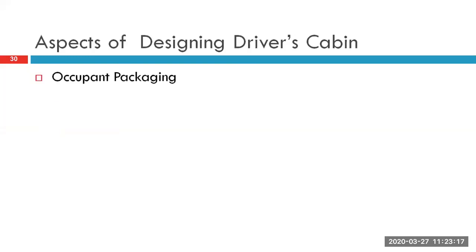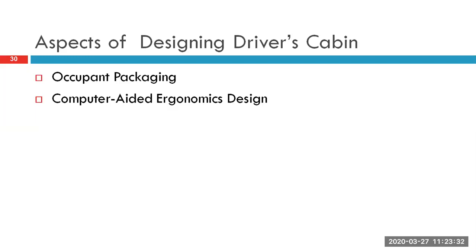Moving ahead to different aspects of the driver's cabin: you have occupant packaging, which needs to be taken care of. Then CAD/CAE ergonomic design — using software or commercial packages, you can design the driver's cab and find out the reaches of different controls and the comfort level. The visual aspects inside the driver's cabin are also very important: how the driver is able to spot different objects on the road, oncoming traffic, and traffic behind.